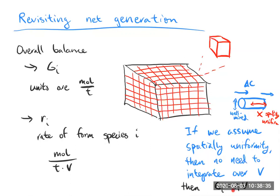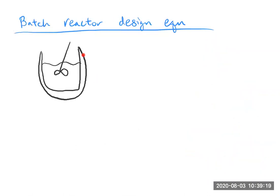Checking units: R_i is moles per time per volume, V is volume, so the volumes cancel out giving moles per time. That all checks out. We're going to spend a lot of time in the next video talking about what these different reactor situations look like as we move from a general shape to specific cases. So let's dive into our first specific case: the batch reactor.